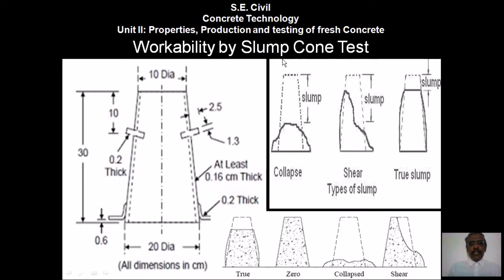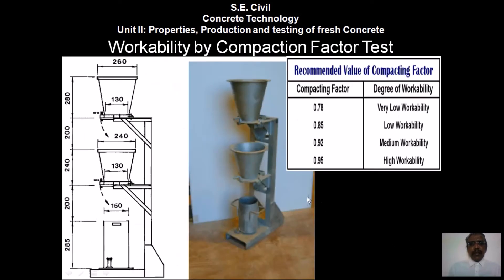Workability by slump cone test can be done in the lab as well as in the field. The cone has a top diameter of 10 cm, bottom diameter of 20 cm, and height of 30 cm. It is filled in three layers, tamped, then removed. The types of slump are: collapse slump, shear slump, and true slump. Zero slump indicates the concrete is not workable.